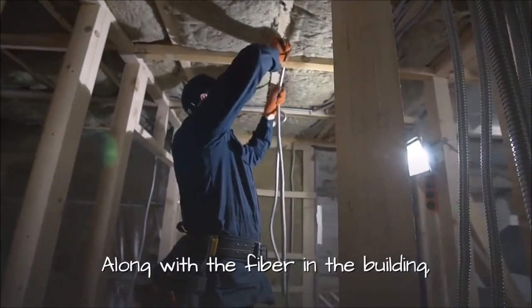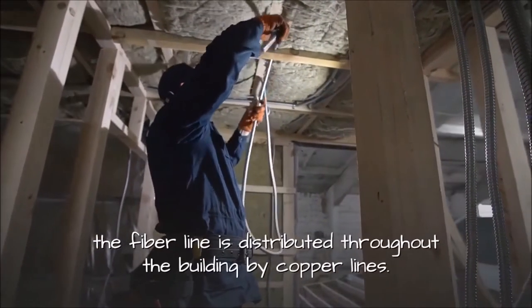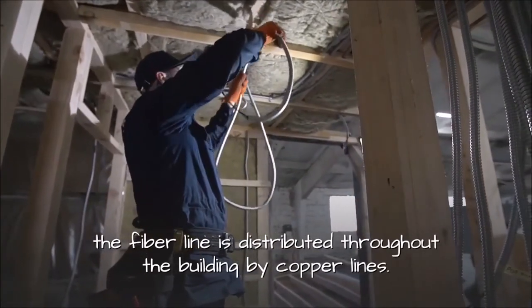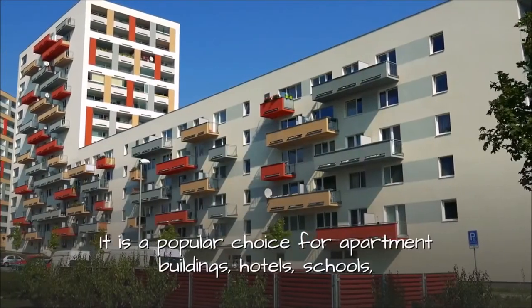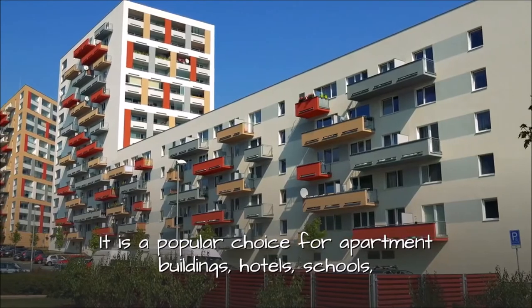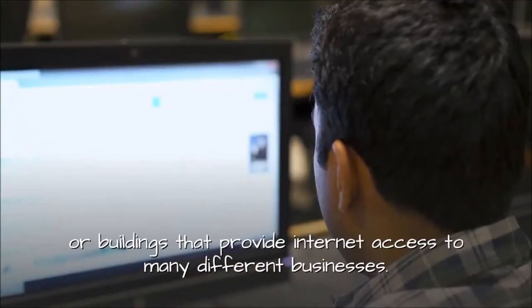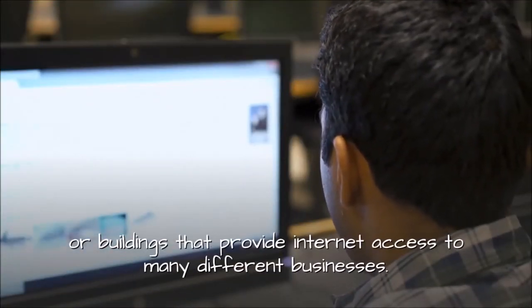FTTB: With fiber to the building, the fiber line is distributed throughout the building by copper lines. It is a popular choice for apartment buildings, hotels, schools, or buildings that provide internet access to many different businesses.